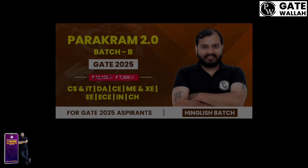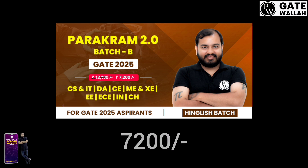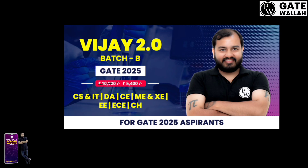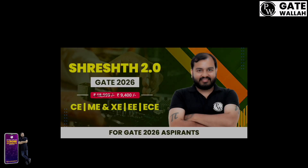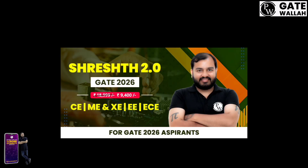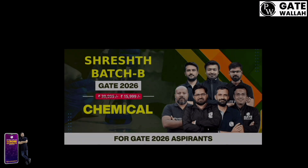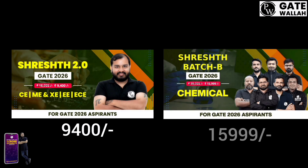We have Parathran 2.0, 25 batch B at Rs. 7,200, which is Hindi and English batch. And we have Vijay 2.0, GACE 25 rank improvement batch B at Rs. 5,400. And we have Stays 2.0, GACE 26 batch B and Stays 2.0, GACE 26 chemical batch B at Rs. 9,400 and Rs. 15,999 respectively.